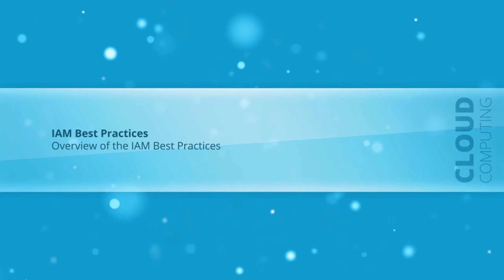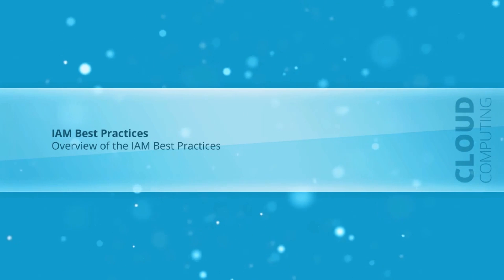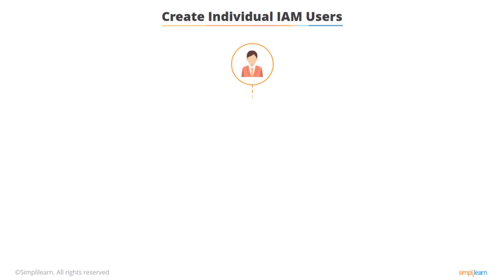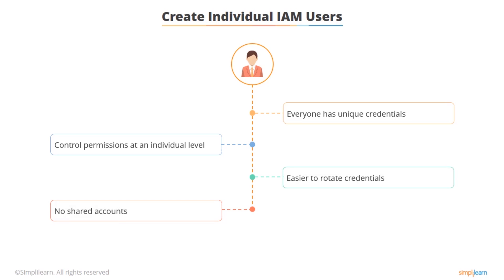These are the IAM best practices – the final lesson in the IAM section. First, always create individual IAM users. This means everyone in your organization will have unique credentials, you can control permissions at an individual level, it's easier to make users rotate credentials, and it's much easier to identify security breaches. With shared accounts, a forensic investigation to pinpoint exactly where a problem came from is probably not going to happen.